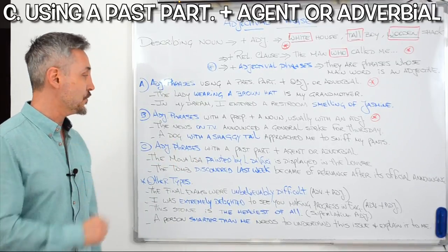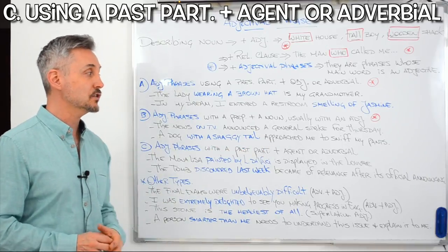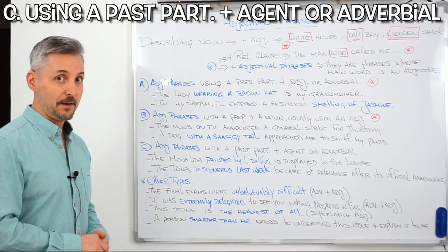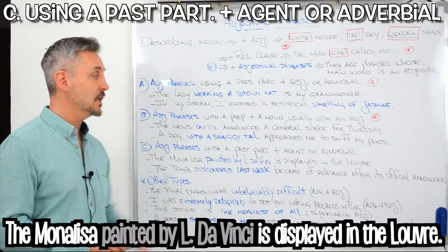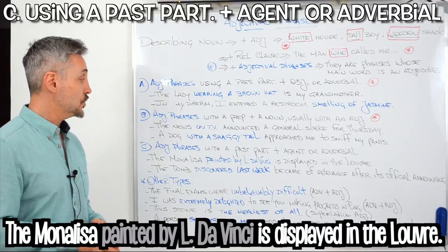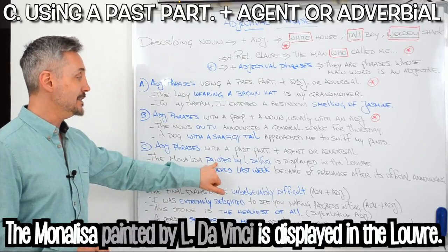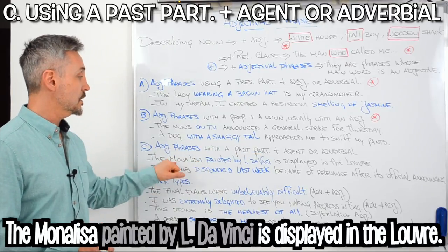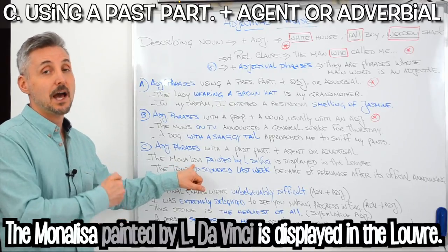Let's take a look at the third group: adjectival phrases with a past participle plus agent or adverbial. Like in the example: The Mona Lisa painted by Leonardo da Vinci is displayed in the Louvre. So, we have painted by Leonardo da Vinci — painted is the past participle of paint, and it describes the Mona Lisa. It's more information about the noun, about the Mona Lisa.